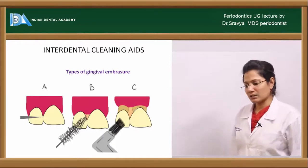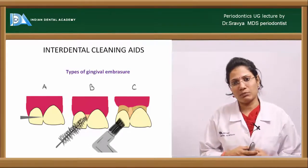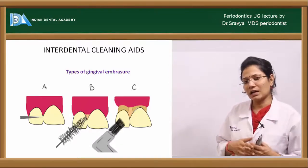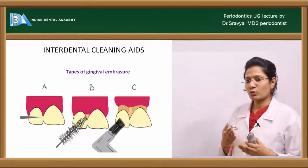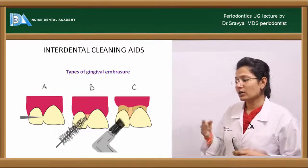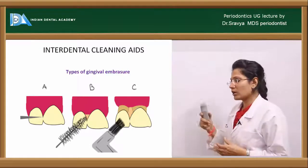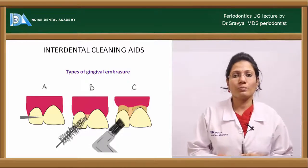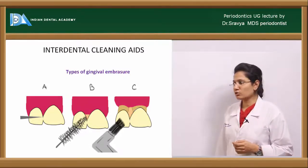Moving on to interdental aids, there are three types of interdental embrasures: Type 1 is a tight interproximal contact; Type 2 has some interproximal tissue and bone loss; and Type 3 has gingival recession with severe interdental soft tissue and bone loss. For Type 1, dental floss is advised; for Type 2, interdental brushes are used; and for Type 3, unitufted brushes are used.